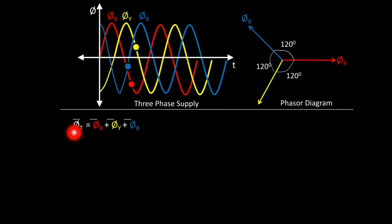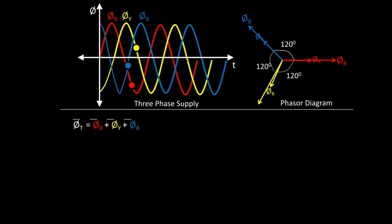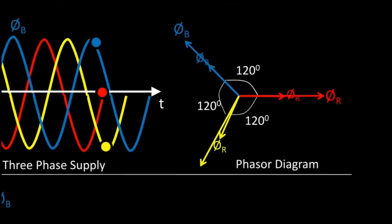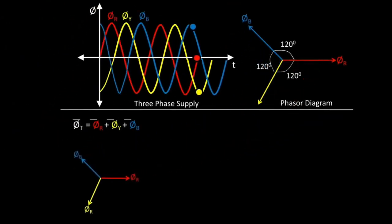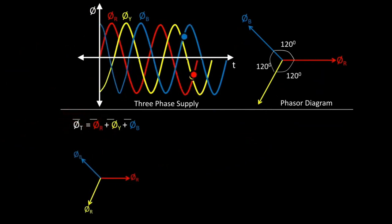The phasor of φT will be the phasor addition of φR, φY, and φB. For that, we are having the original phasors available. So we will add these three — φR, φY, and φB — to get the total flux φT for any particular instant.